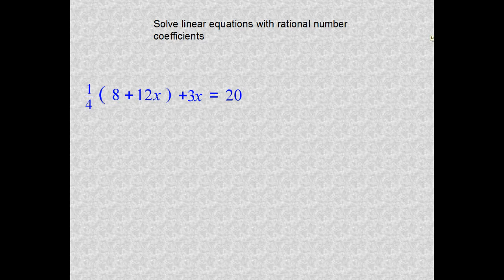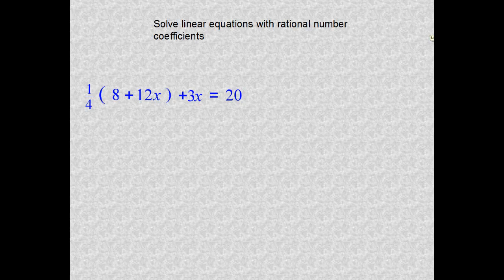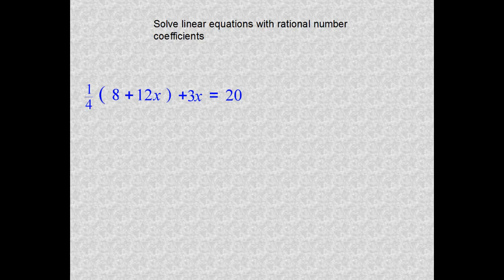Right from the standard: solve linear equations with rational number coefficients. So I see the one-fourth outside of the parentheses sign there, and that's what we're going to be dealing with today. We'll use the distributive property, combine our like terms, move terms from one side to the other, and ultimately figure out what that value of X is that will make this equation true.